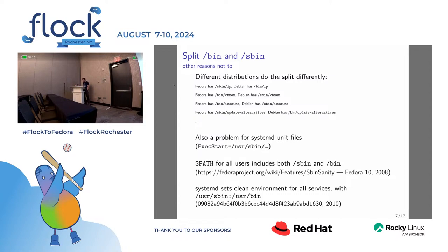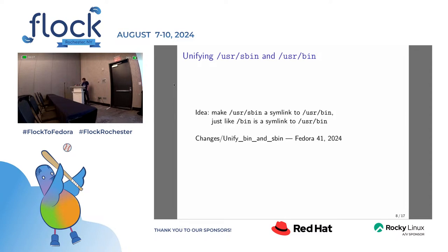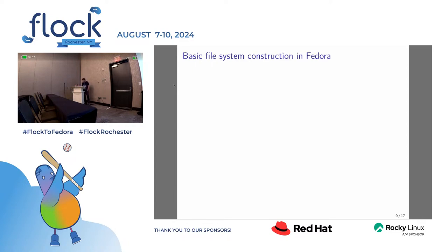Around 2010 it really stopped making sense to have the split, and now it's 2024, so it's time to get rid of it. The change proposal was submitted for Fedora 41. When I submitted the talk I thought this would already be implemented and I'd be talking about it in the past tense — unfortunately that's not true. The basic idea is to make /bin, /sbin, and /usr/sbin symlinks to /usr/bin. Before talking about the details of the merge, a quick reminder of how file systems are constructed.